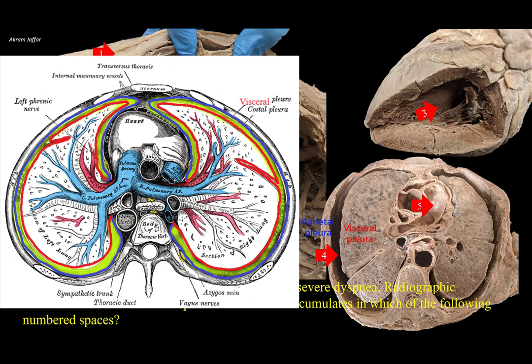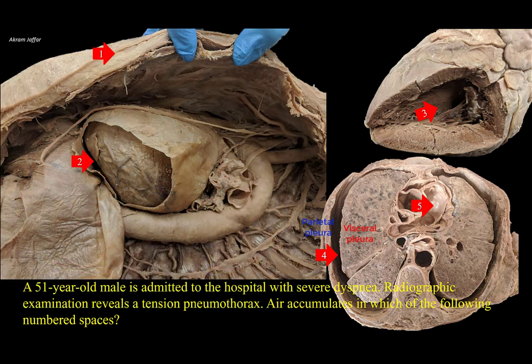The serous pleural fluid lubricates the pleural surfaces, allows the layers of pleura to slide smoothly over each other during respiration, and its surface tension provides a cohesion that keeps the lung surface intact with the thoracic wall. So the correct answer is that the air accumulates in space four, but let's look at the other spaces.